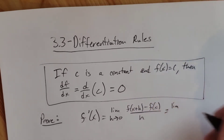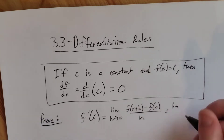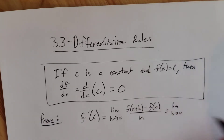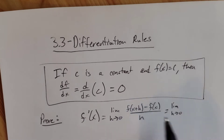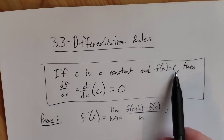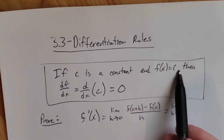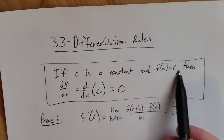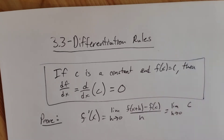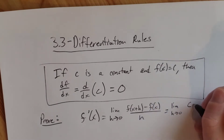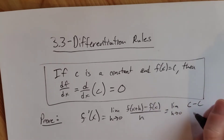This is equal to the limit as h goes to zero of: what is f of x plus h? Well, that says that everywhere we see an x in our function we write x plus h. There is no x, so the whole function is just C. Same thing with minus f of x — this is minus C again — all over h.